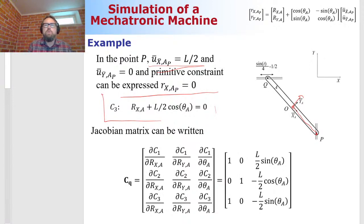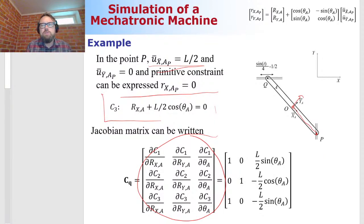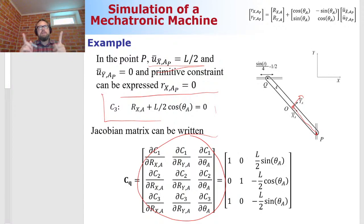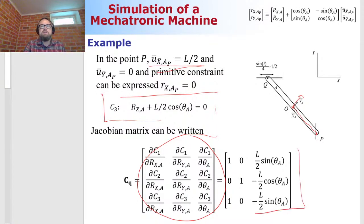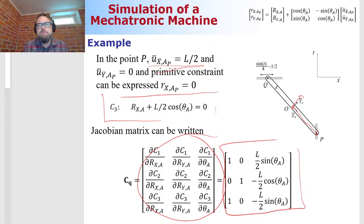Differentiating constraint equations with respect to generalized coordinates gives the Jacobian matrix. Because there is one moving body, we have three generalized coordinates, so the Jacobian is 3×3 — equal rows and columns. Second in-class quiz: how many degrees of freedom does this system have? Options are zero, one, two, or one hundred. You can compute this from generalized coordinates minus constraint equations, or from the Jacobian dimensions.